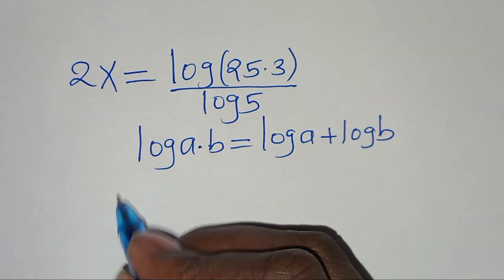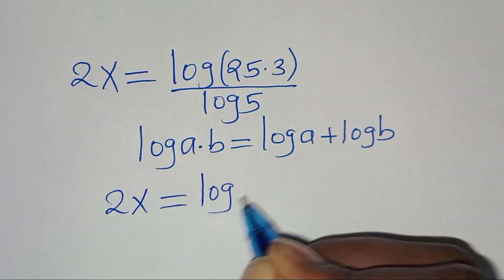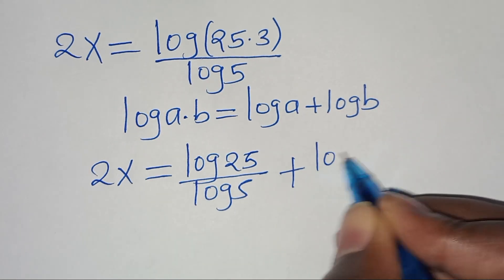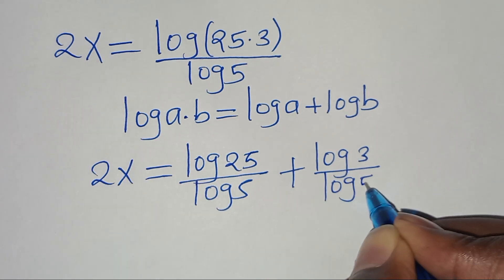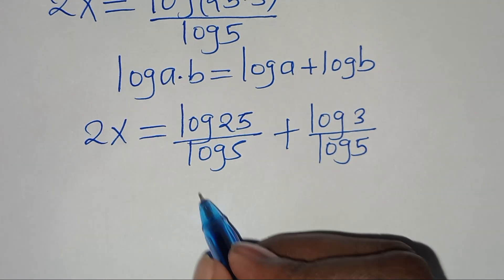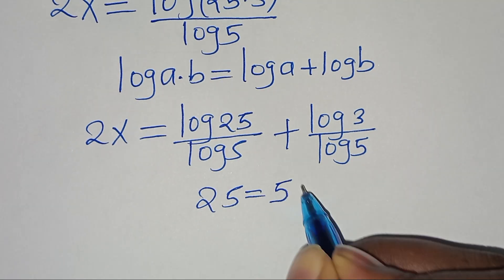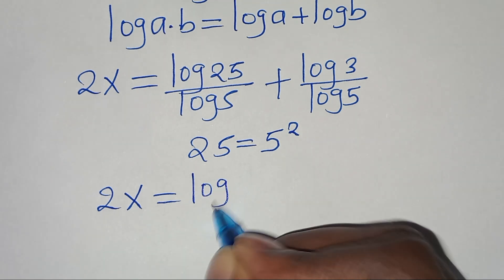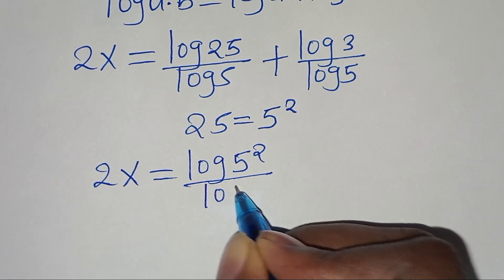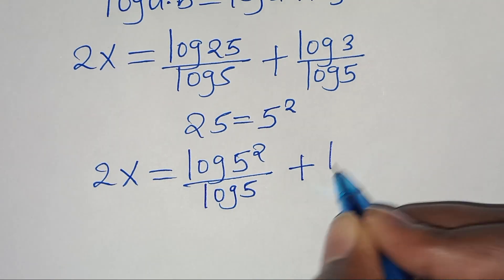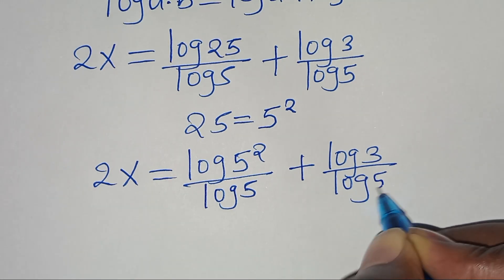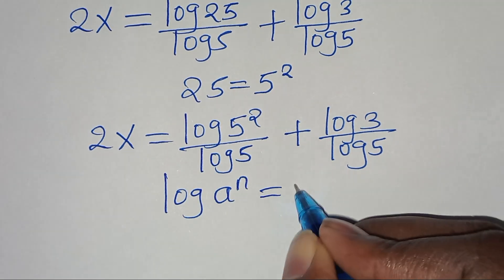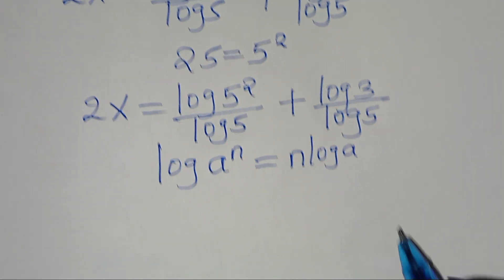Applying the product property, we have 2x equal to log 25 divided by log 5, plus log 3 divided by log 5. Since 25 can be expressed as 5 squared, this becomes log(5^2) divided by log 5, plus log 3 divided by log 5. Using the power rule, log(5^2) becomes 2·log 5.